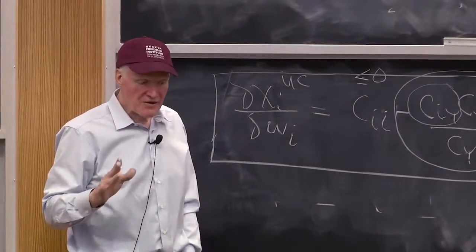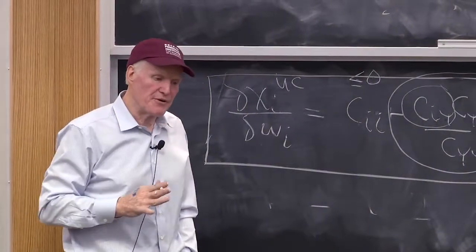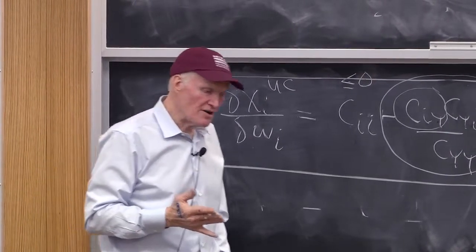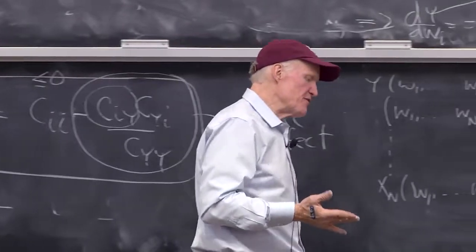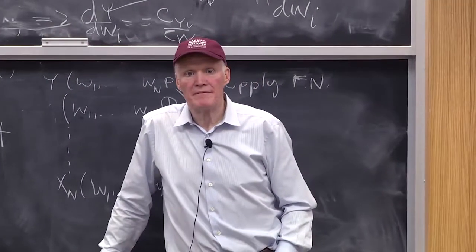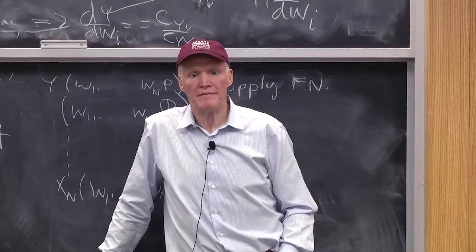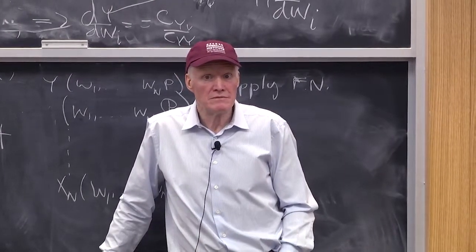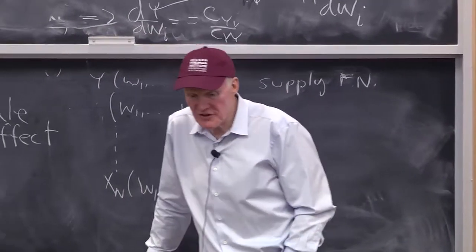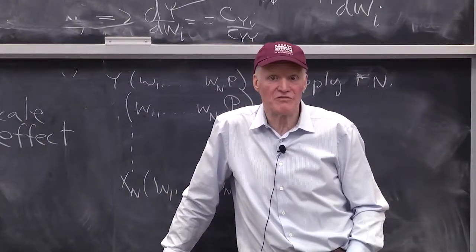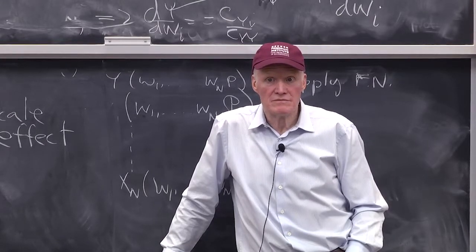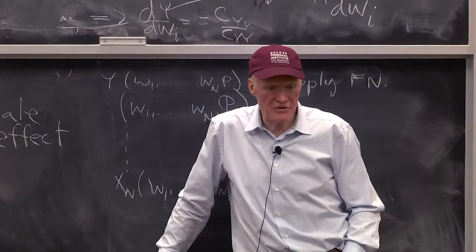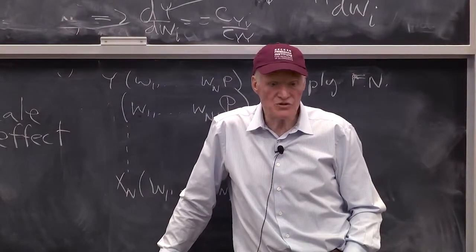Now, the tricky one is the inferior input case. Alright? So what happens to marginal cost when the price of an inferior input goes up? Marginal cost actually goes down. That is, the higher price for this input causes marginal cost to fall. How is that possible? How could a higher price for an input cause marginal cost to go down?